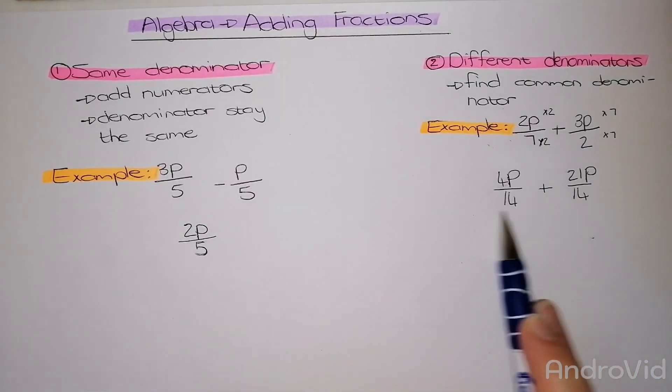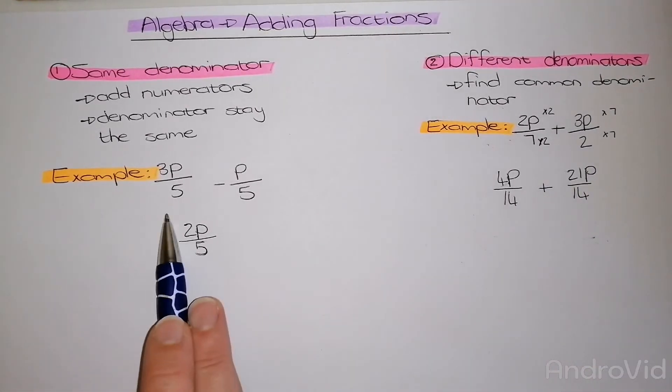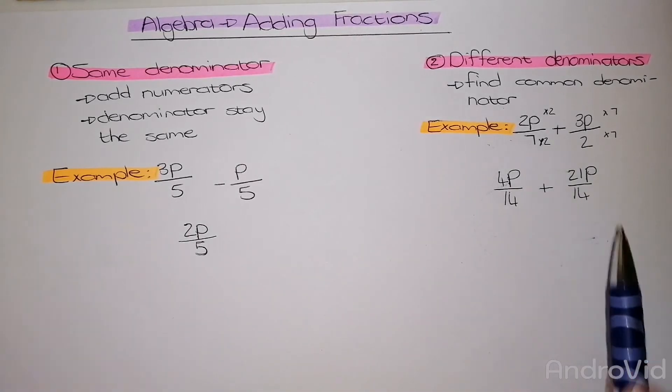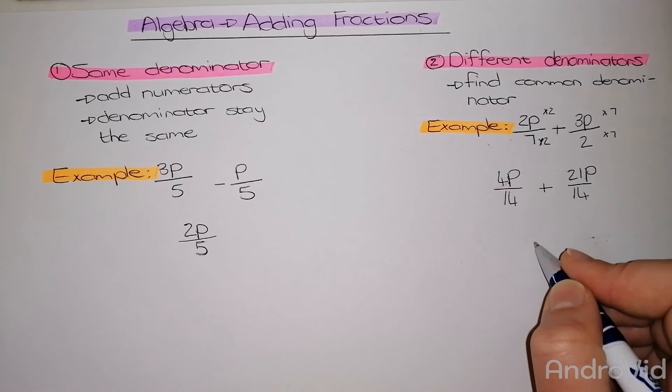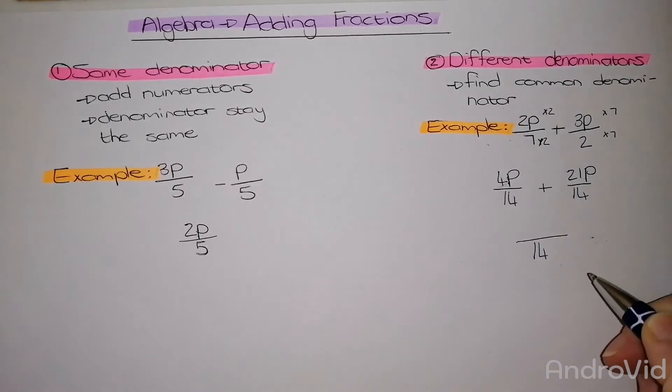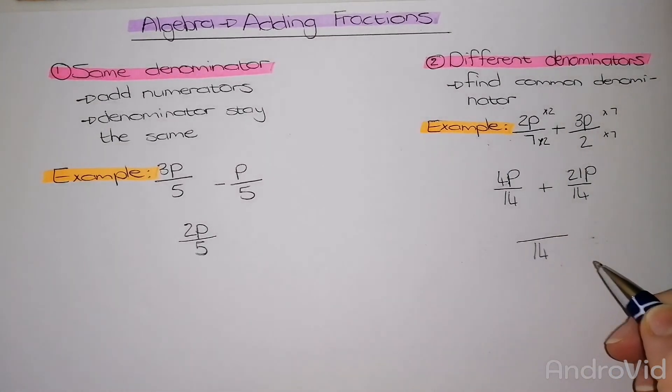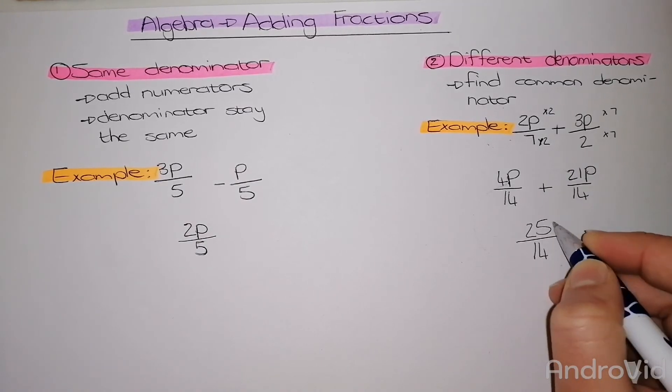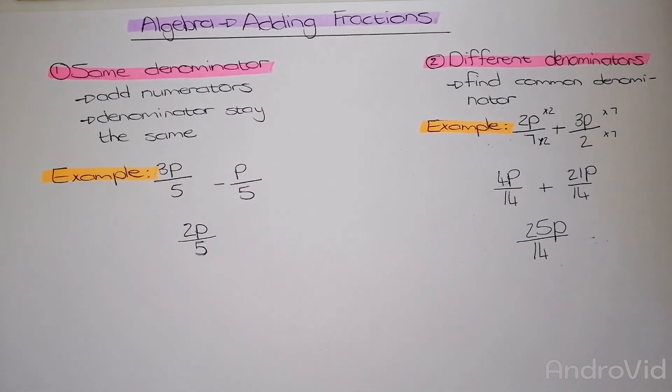Now that I have the same denominator, like I did with the first example, all I need to do now is add the top with each other. So my final answer is going to have a denominator of 14, and 21 plus 4 gives me 25P. And that is how we add and subtract fractions.